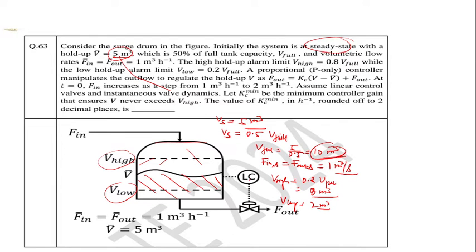A P controller is used as a level controller to regulate the outflow F_out to control the holdup. F_out varies with a given relation. At time t = 0, F_in increases as a step — from 1 meter cube per hour to 2 meter cube per hour, a step disturbance of magnitude 1. We need to find Kc_minimum, the minimum controller gain that ensures the volume never exceeds V_high.